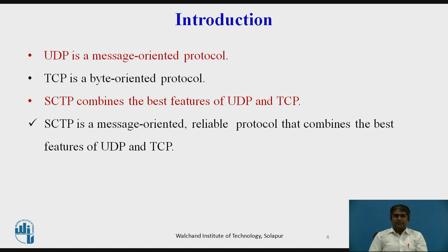UDP also lacks features such as congestion control and flow control needed for a transport layer protocol. TCP is a byte-oriented protocol. It receives a message or messages from a process, stores them as a stream of bytes, and sends them in segments. There is no preservation of the message boundaries. However, TCP is a reliable protocol. Duplicate segments are detected, lost segments are resent, and bytes are delivered to the end process in order. TCP also has congestion control and flow control mechanisms.